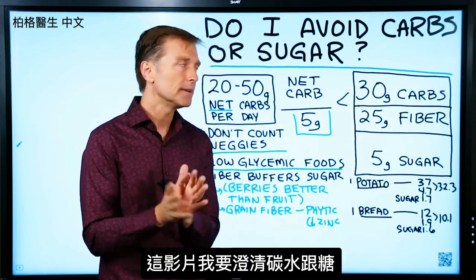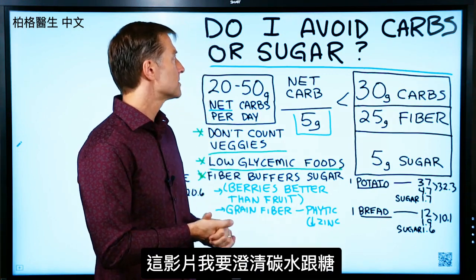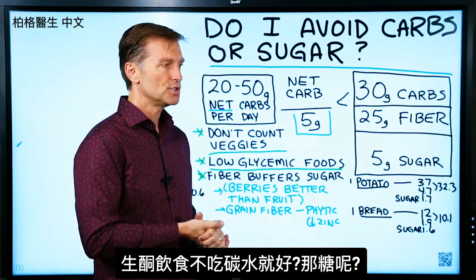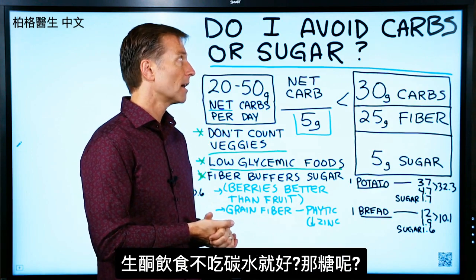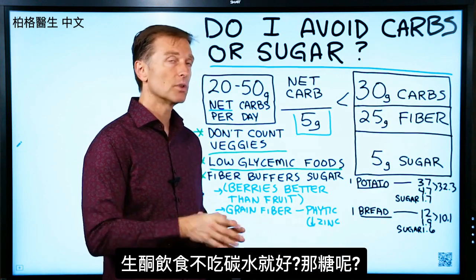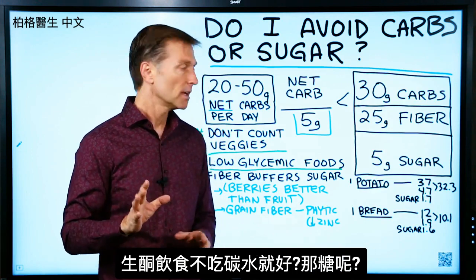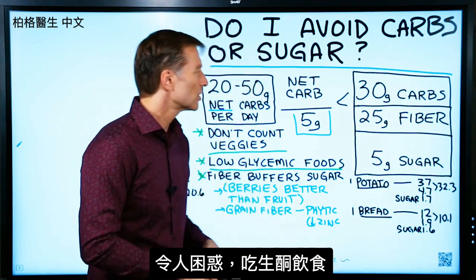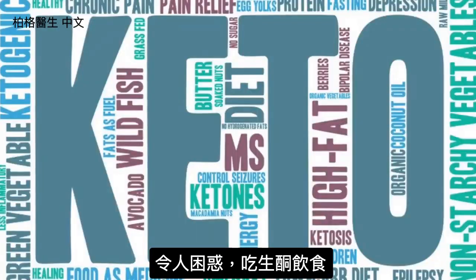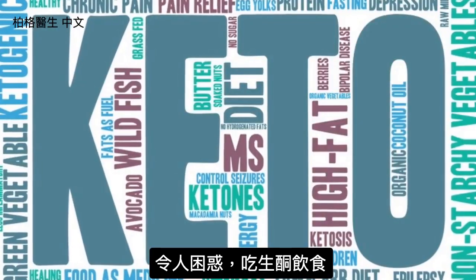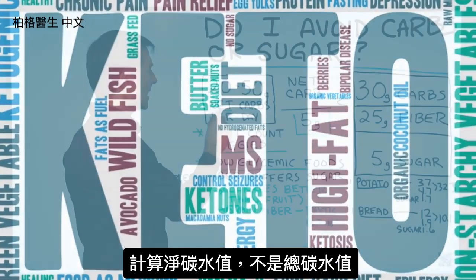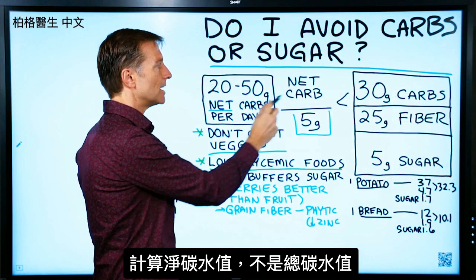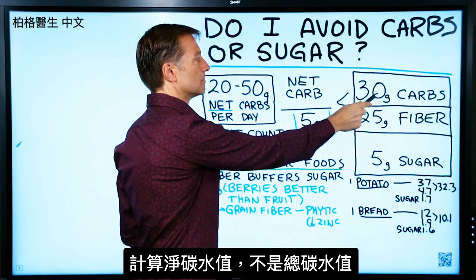In this video, I want to clarify carbs from sugar. Do you just avoid carbs? Do you worry about sugar on keto? It's a little confusing. So when we do keto, we're talking about net carbs, not total carbs.